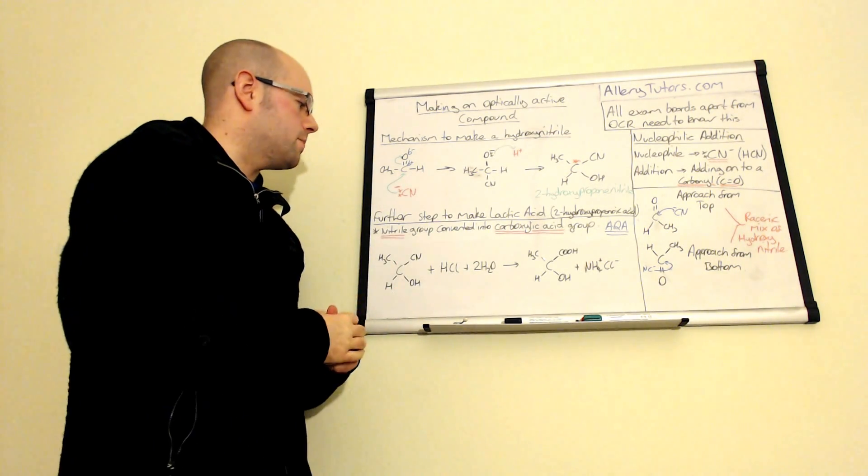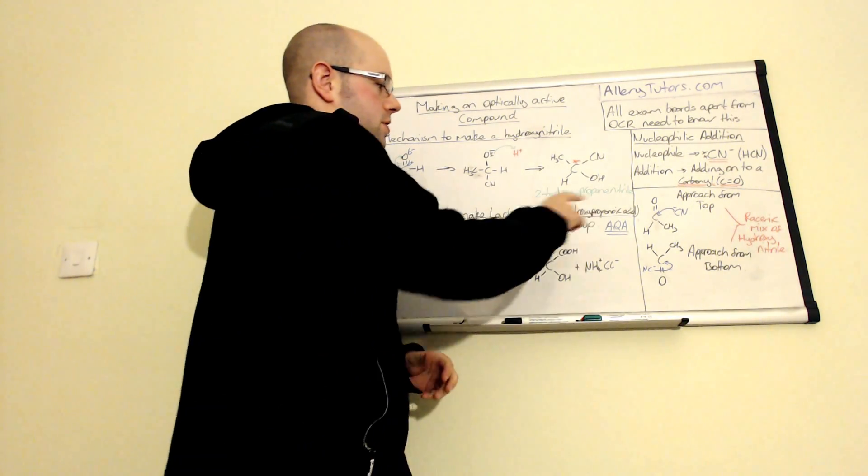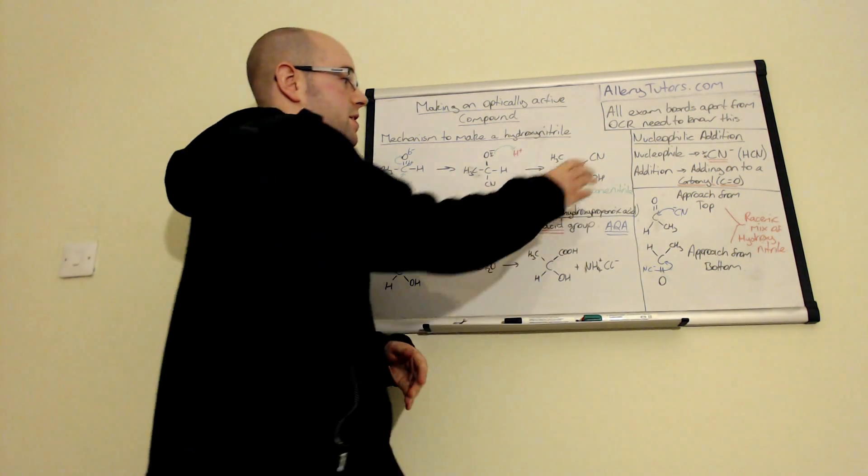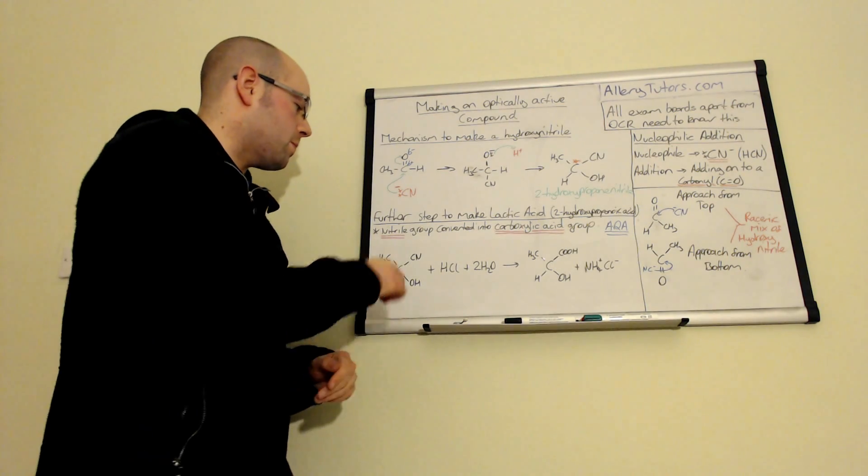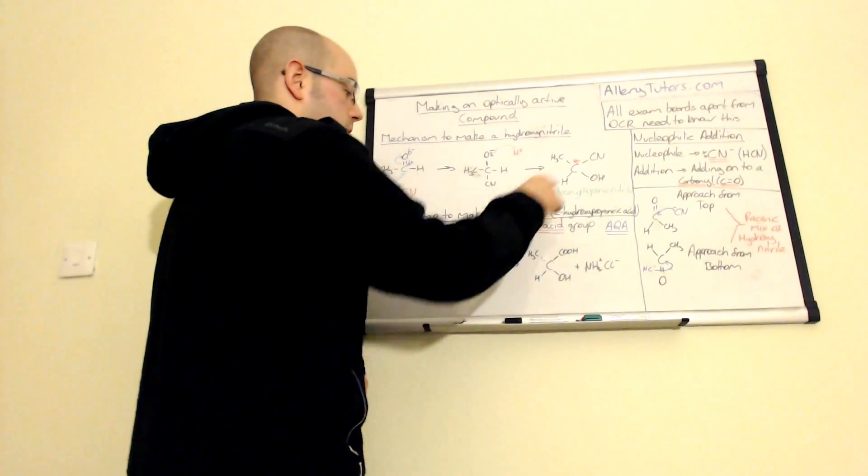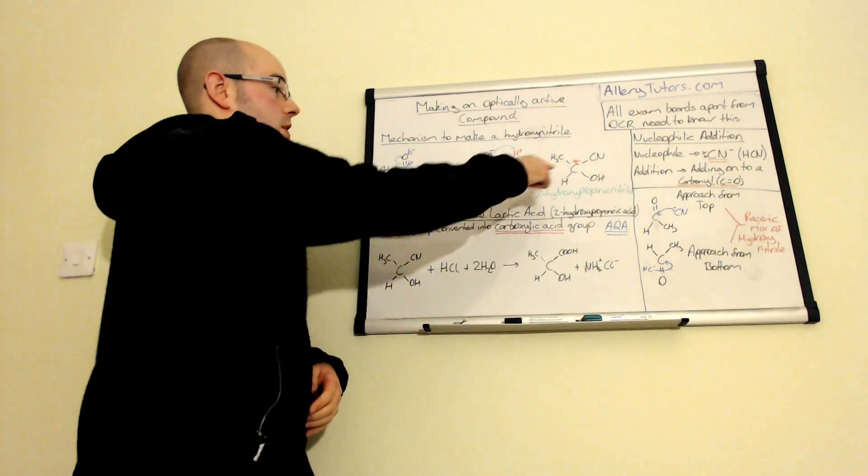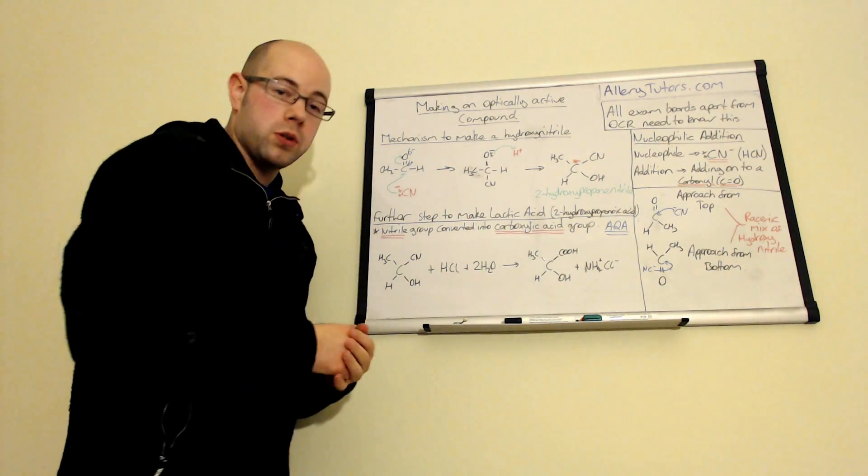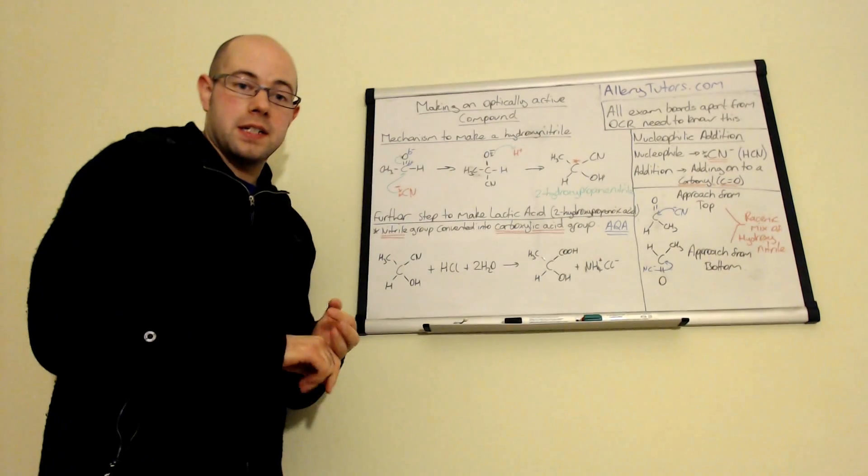Okay, if you're doing AQA, you do need to know a further step to make lactic acid in particular. So lactic acid is 2-hydroxypropanoic acid. And all we have to do is we actually take this molecule here, this is your hydroxynitrile, and we're basically going to convert the nitrile group into a carboxylic acid group. So here's your hydroxynitrile from the previous step. And if we add hydrochloric acid and water to it, then actually what you'll form is your lactic acid.